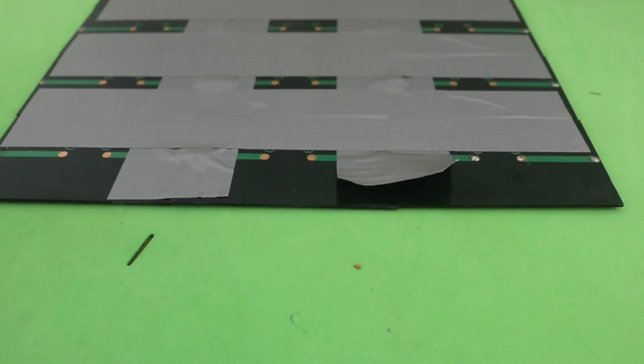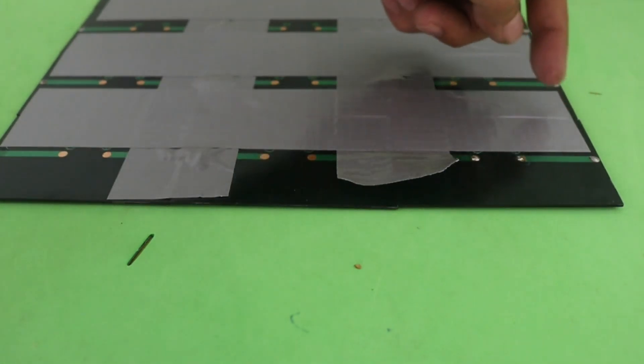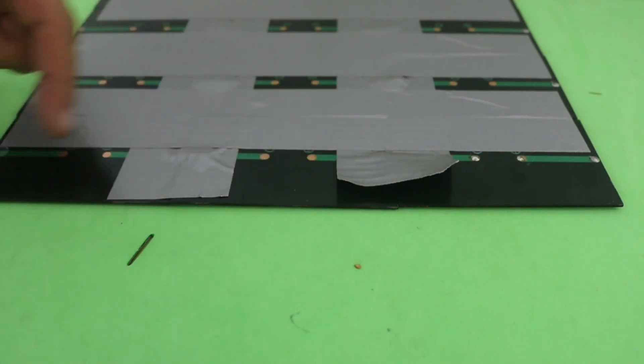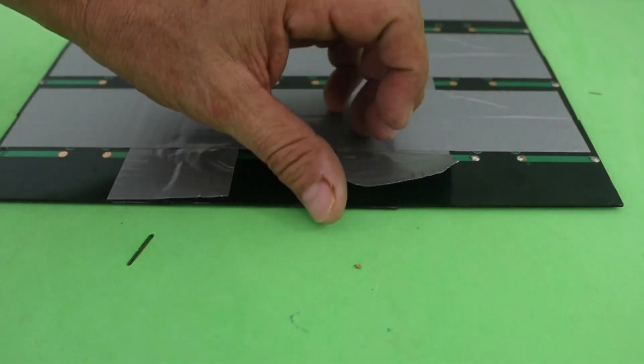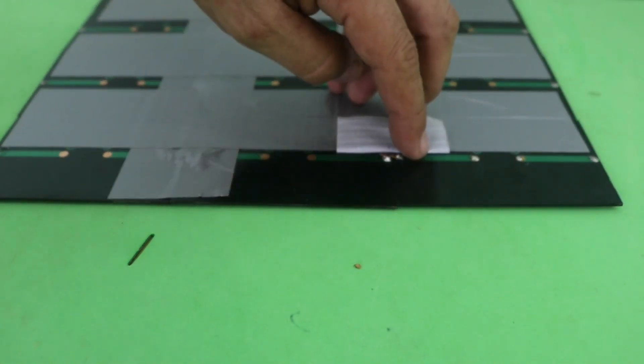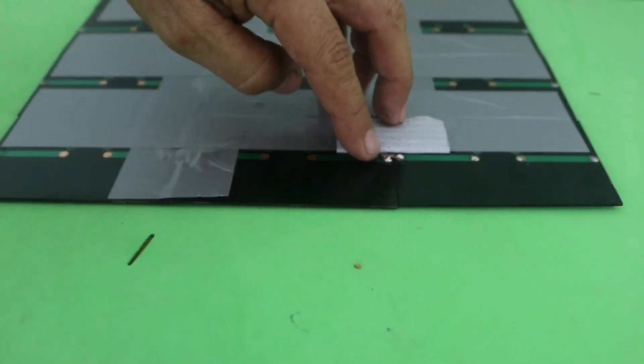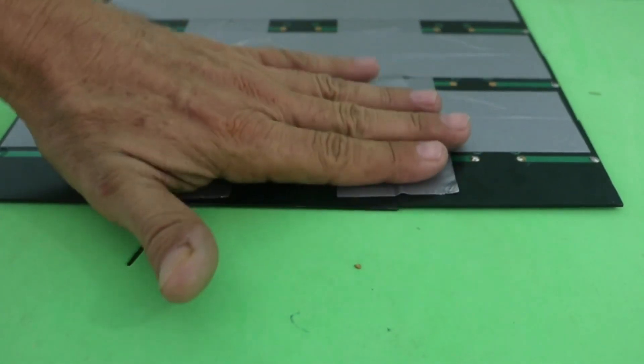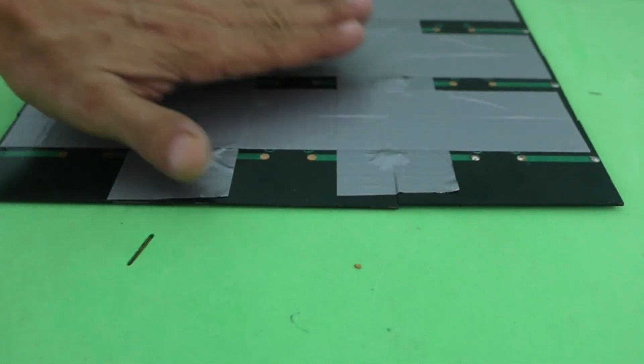The connection of the cells is very simple. Each cell has a positive-negative, positive-negative and positive-negative. In order to connect them in series you just have to connect the negative of one cell to the positive of the other. And of course the duct tape is just to keep all the cells together.